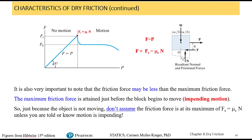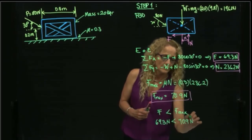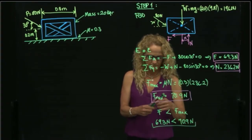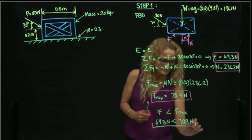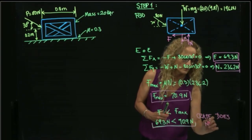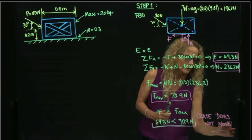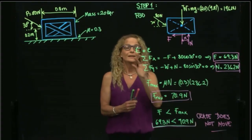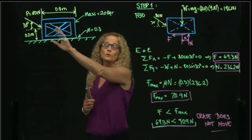The theory reminds us that the friction force may be less than the maximum friction force. The maximum friction force is attained just before the block starts moving — that's called impending motion. Just because the object is not moving, don't assume the friction force is at its maximum value. Therefore, the crate does not move — it did not reach impending motion — so with this force applied, the box does not reach impending motion.